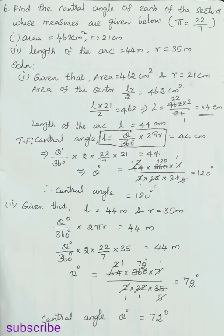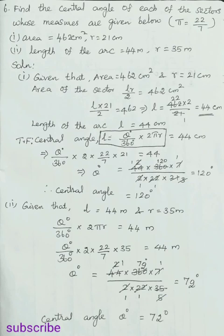So the central angle for the first problem is 120 degrees. For the second problem, arc length l equals 44 meters and radius r equals 35 meters are given. Using the arc length formula: theta divided by 360 degrees times 2 pi r equals 44 meters. Substituting: theta divided by 360 degrees times 2 times 22/7 times 35 equals 44. Therefore theta equals 44 times 360 degrees times 7 divided by 2 times 22 times 35.